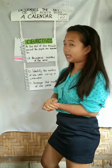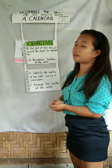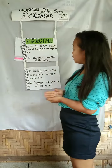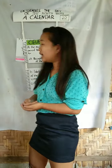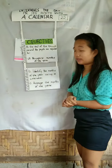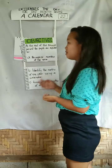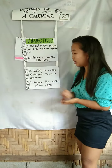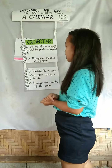Our objective for today is at the end of the 15-minute period, the pupils are expected to: A. Recognize months of the year; B. Identify the months of the year using a calendar; and C. Arrange the months of the year.